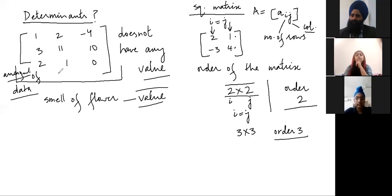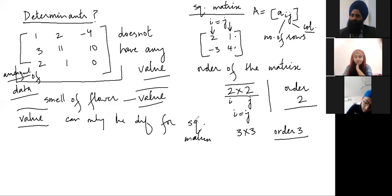I'm not talking about determinant because matrix is simply arrangement of data that doesn't have any value, but what is a determinant? Determinant. Determinant is a value. And what is a value? Determinant can only be defined for square matrix. Why? That you will come to know yourself very soon.